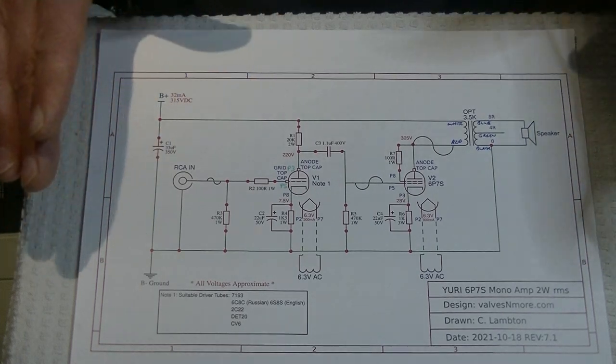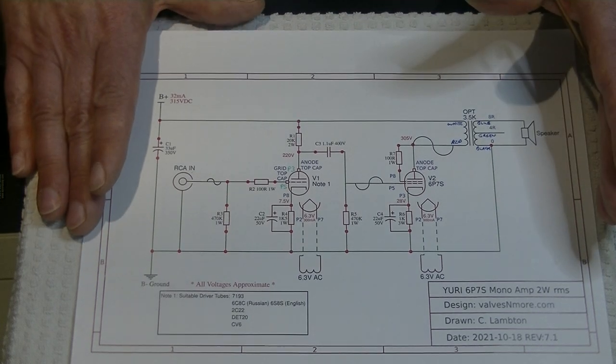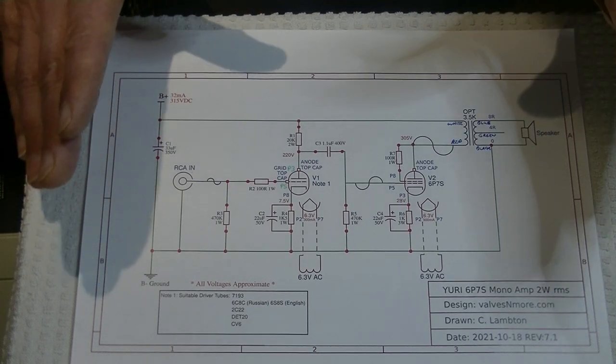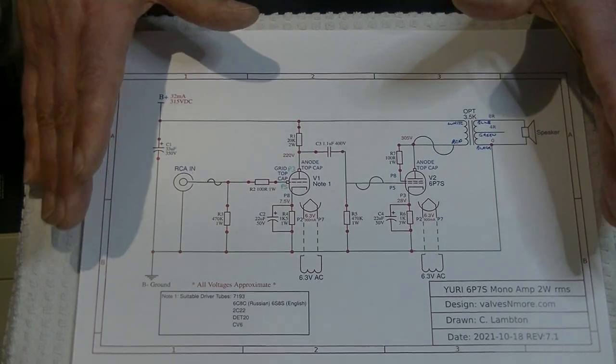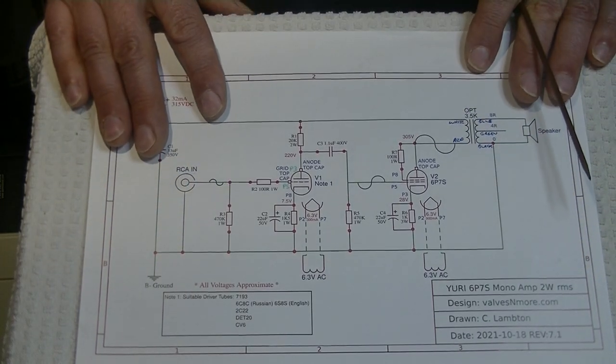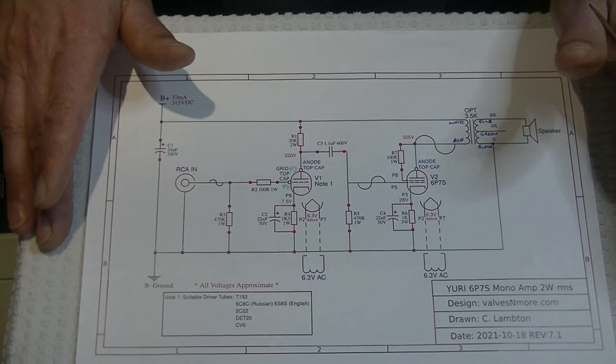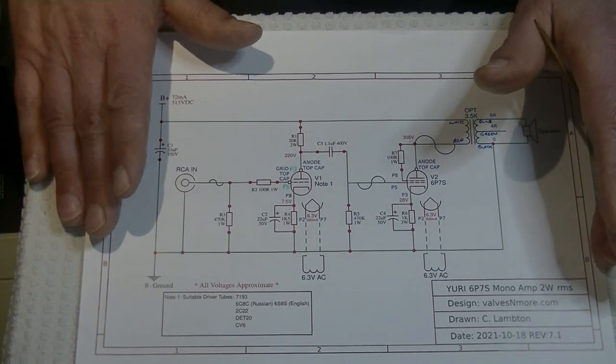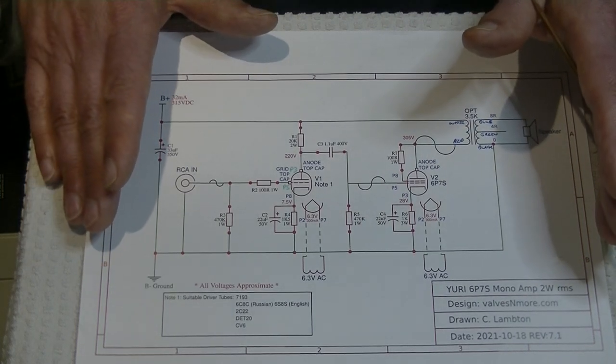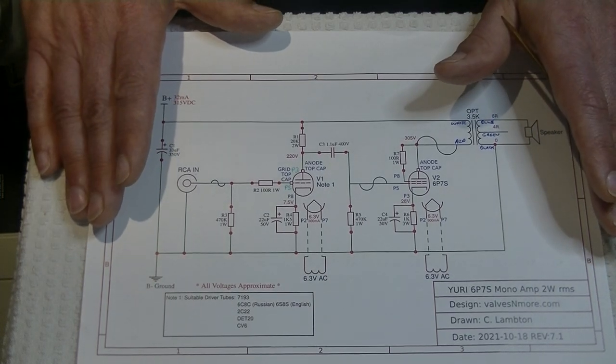Now the biggest drawback by far of Class A is that even the big amps only go up to something like 10 watts. And those are huge amps. They're big. They're hot. They're expensive. The Yuri is a solid 2 watts continuous duty. And so it's an honest 2 watt amp. It can drive easily any efficient speaker system up to loud listening volumes.